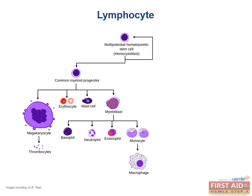Now let's move from the myeloid lineage of cells to the lymphoid lineage of cells. Importantly, there was a long discussion in the immunology chapter that covered innate versus adaptive immunity, MHC classes, lymphoid differentiation, self-surface proteins, steps in activation to lymphocytes, cytokines, and many other important topics. I will not repeat this material, but suggest you review it as it is important to the exam. We will start with our common lymphoid progenitor cell, which can advance to generate cells of either the innate or adaptive immune system.